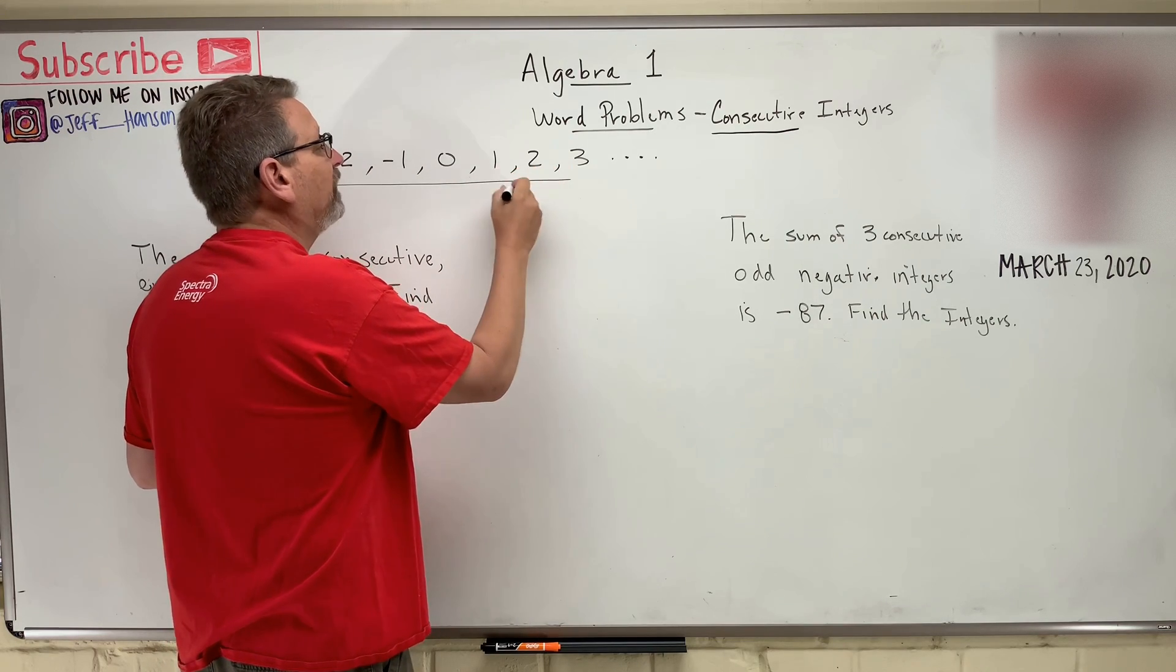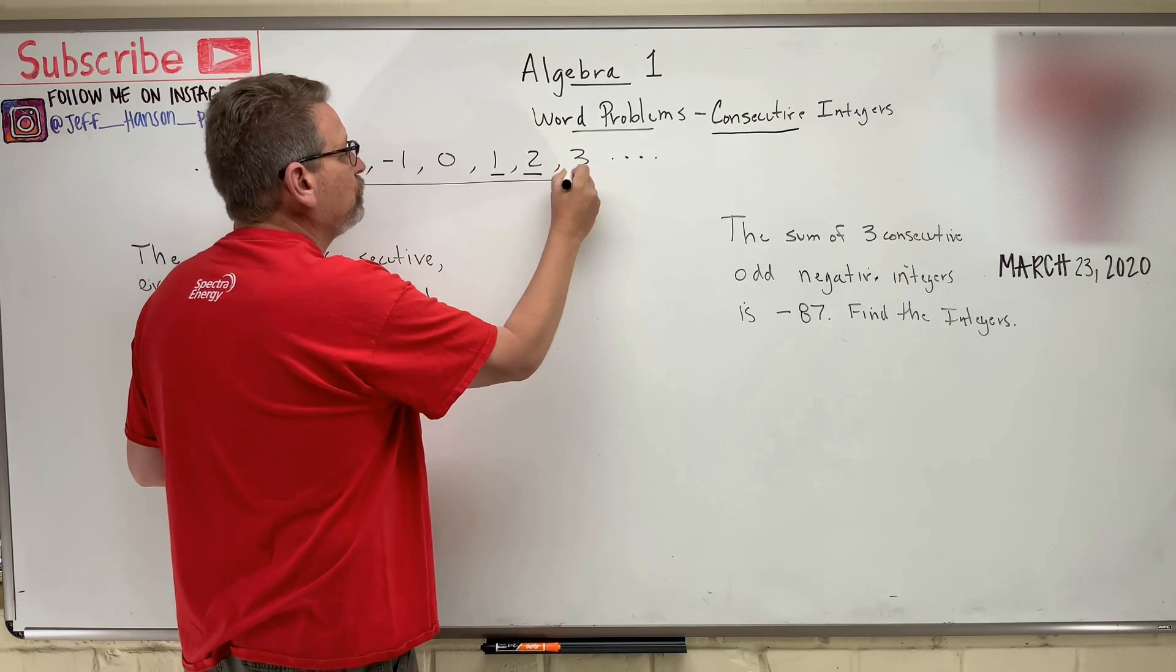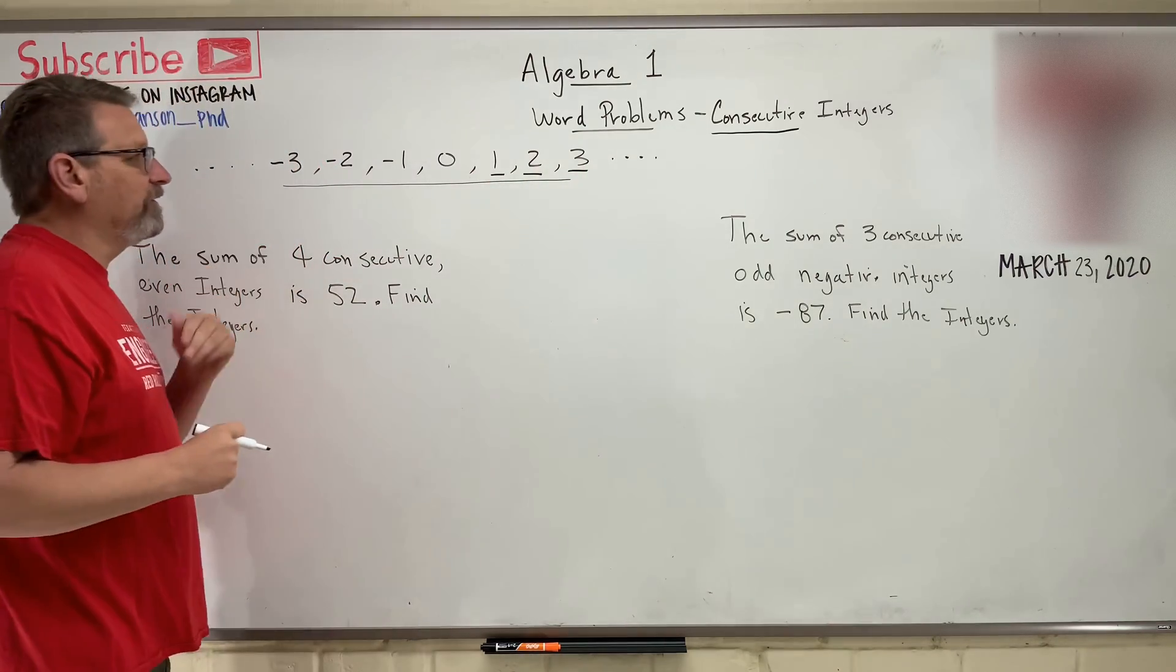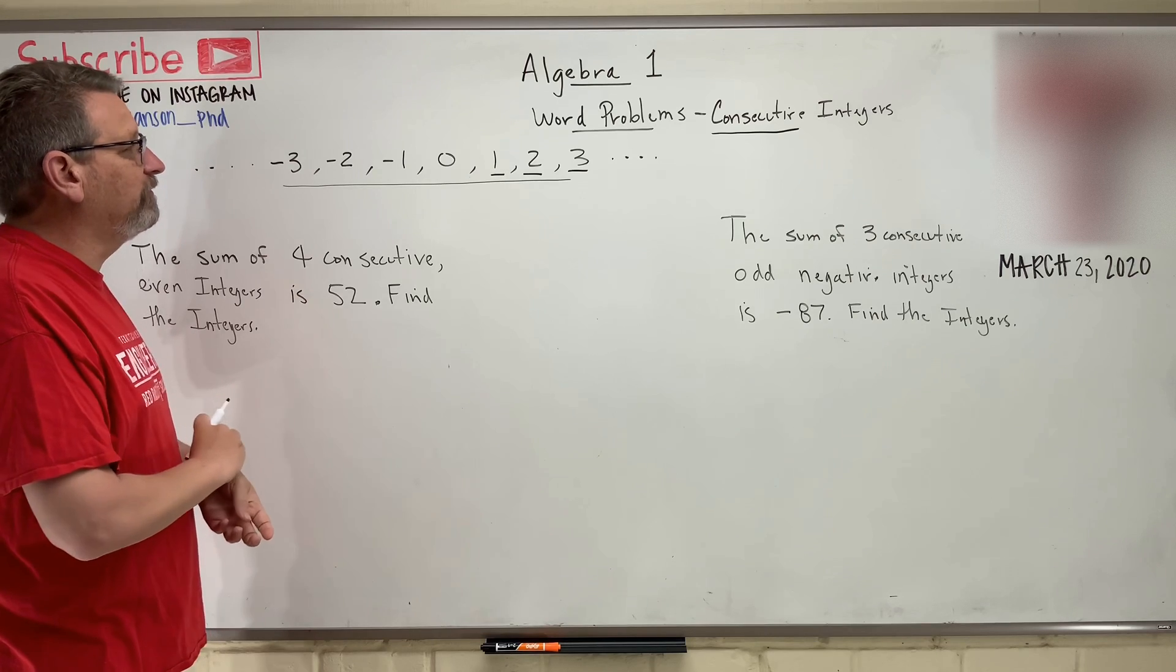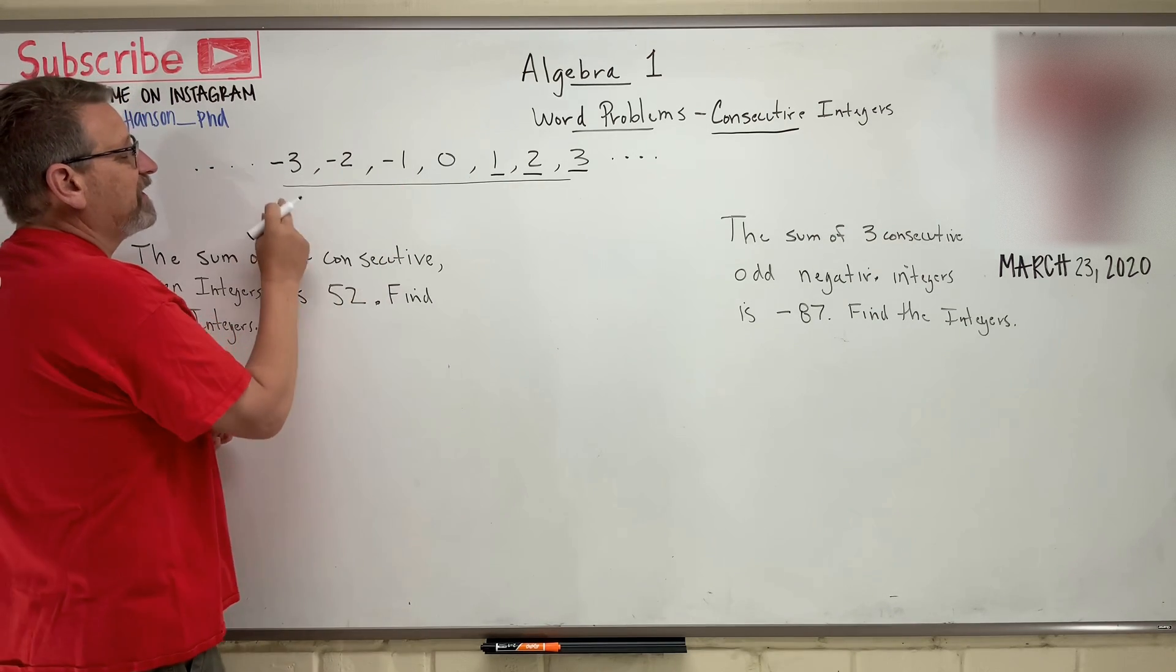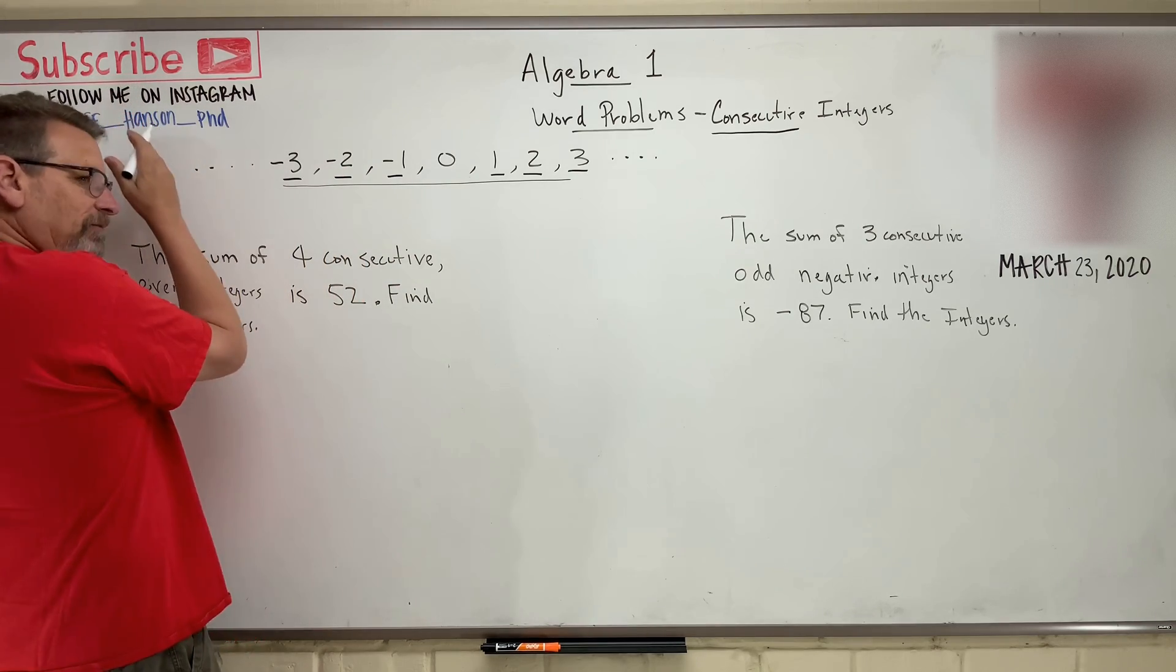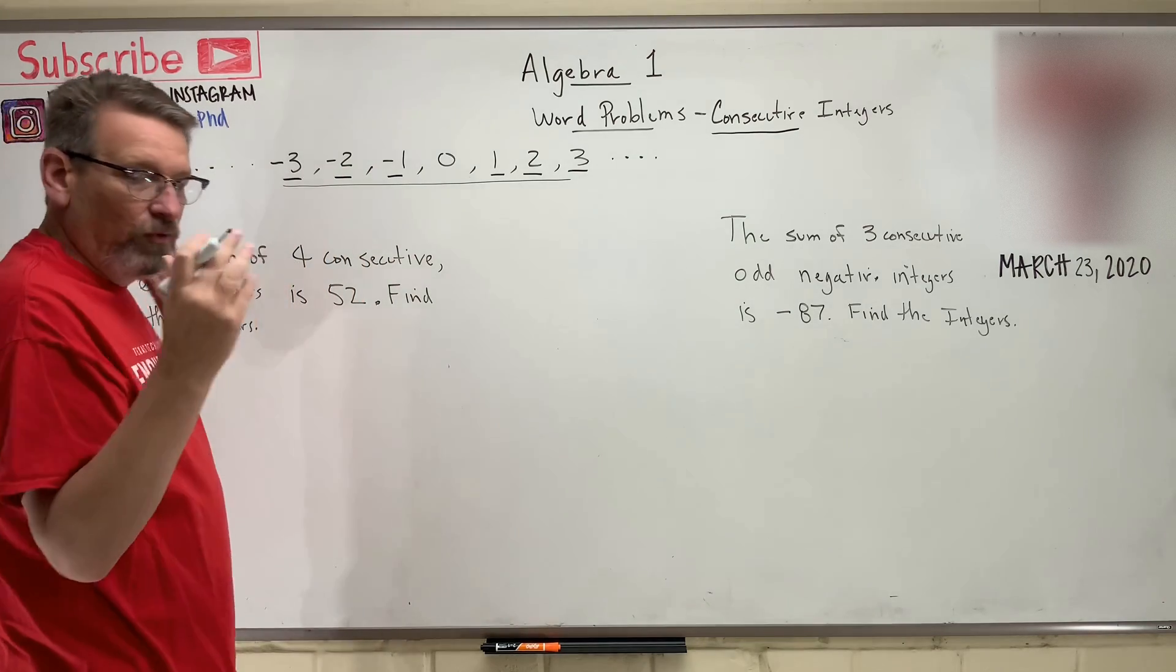So three consecutive integers would be like one, two, and three. They are in a row, okay? Now you can have consecutive integers in the positive, or you could have consecutive integers in the negative, negative one, negative two, negative three, or negative seven, eight, nine, or negative whatever, right?